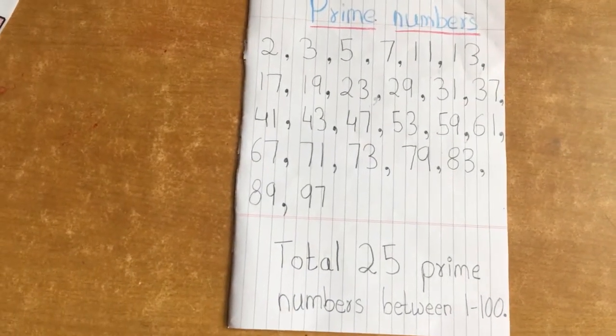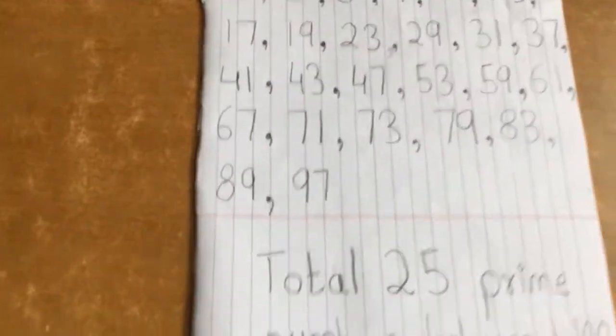So there are totally 25 prime numbers between 1 and 100. That's it friends. Thank you.